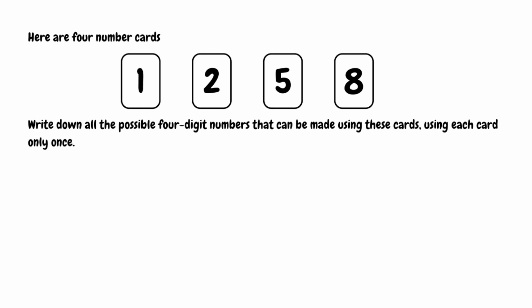The way we can do this systematically is to work in order of size, starting with 1 at the beginning. Our first combination is 1, 2, 5, 8. Keeping 1 and 2 the same and swapping the 5 and 8 gives us 1, 2, 8, 5.